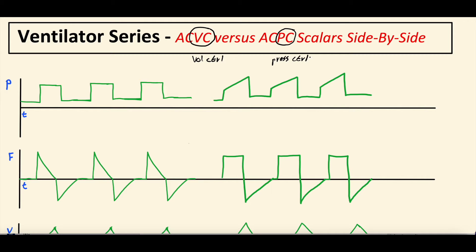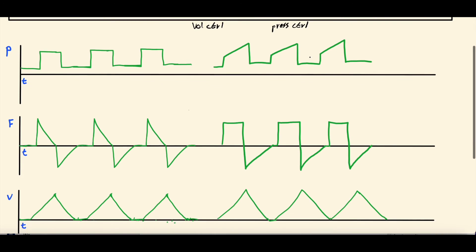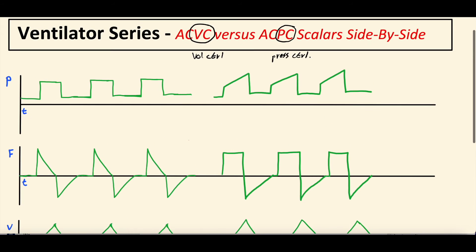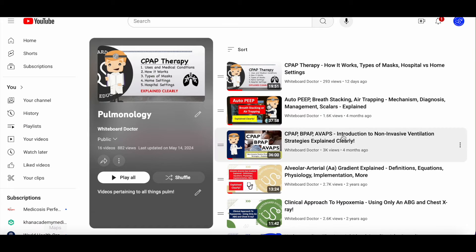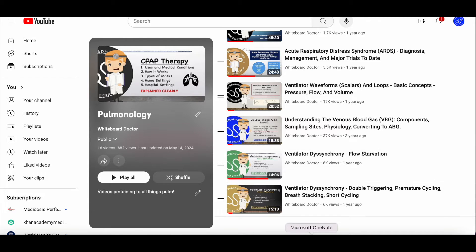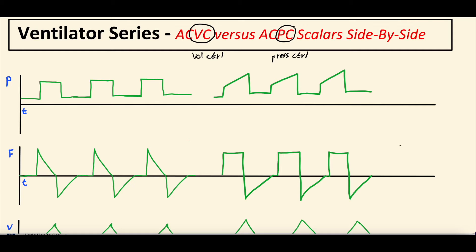Thanks for sticking around. If you watched those other videos, this is all going to sound very familiar. This is part of our ventilator series — we've done a handful of ventilator videos including VC and PC scalars, auto-PEEP, breath stacking, air trapping, double-triggering, premature cycling, flow starvation, and introductory concepts. We'll link all of this in the video description. Today, though, it's volume control and pressure control scalars side by side.